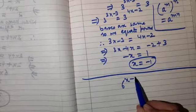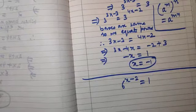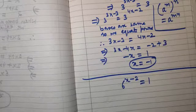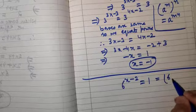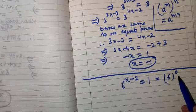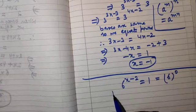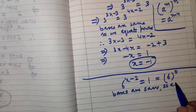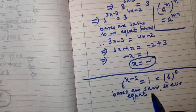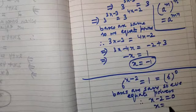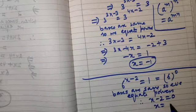Next question: 6 raised to the power x minus 2 is equal to 1. We express 1 as a power of 6 — 1 is 6 raised to the power 0. So 6 raised to the power x minus 2 equals 6 raised to the power 0. Bases are the same, so we equate powers: x minus 2 equals 0, therefore x equals 2.